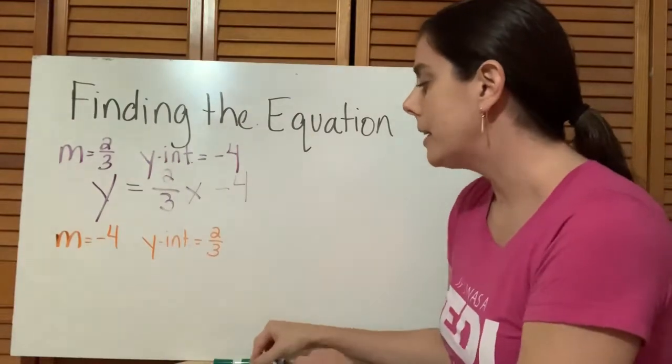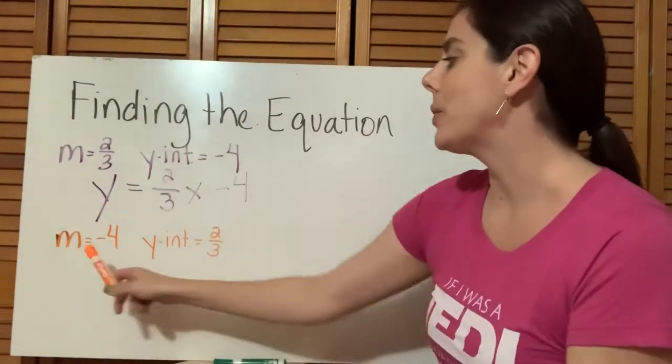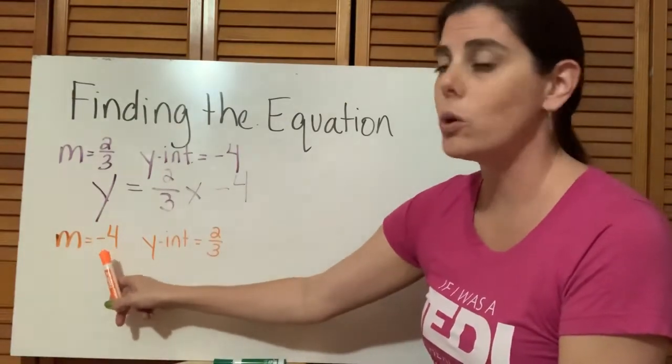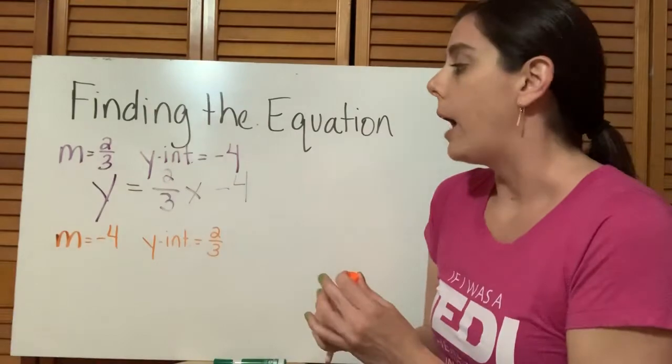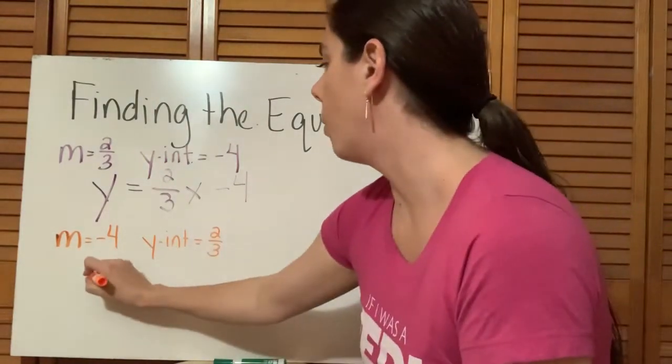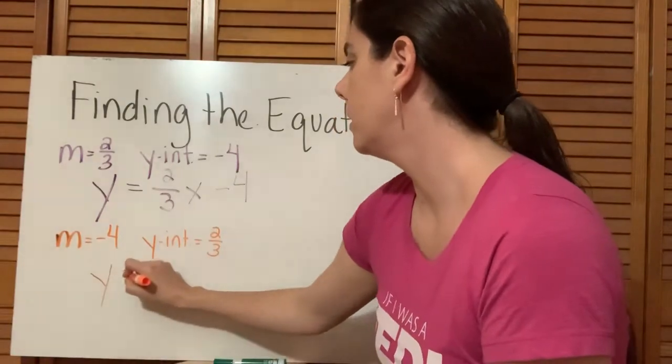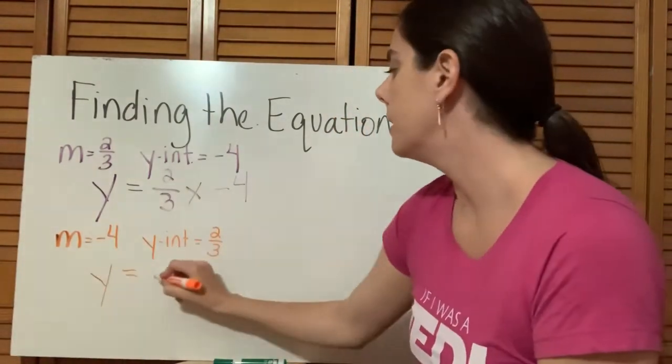Now in the next one, what I did is I used the same values, but I reversed their places. So I have a slope of negative 4 and a y-intercept of two thirds. So how do we create our equation? The same way. So we know that y is going to be by itself. So y equals, what's our m value? Negative 4.